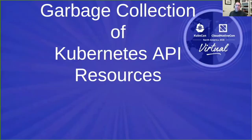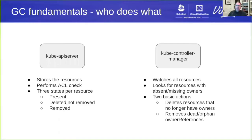Now let's move on to garbage collection of Kubernetes API resources. The first thing to consider is which binaries are involved. We have a kube API server, which does basic CRUD on the resource and tracks state — like is the resource present, has it been removed, or does it have a deletion timestamp set but finalizers that prevent it from being removed. Then we have the kube controller manager, which runs a garbage collector controller that looks for resources with absent or missing owners and takes action on them.